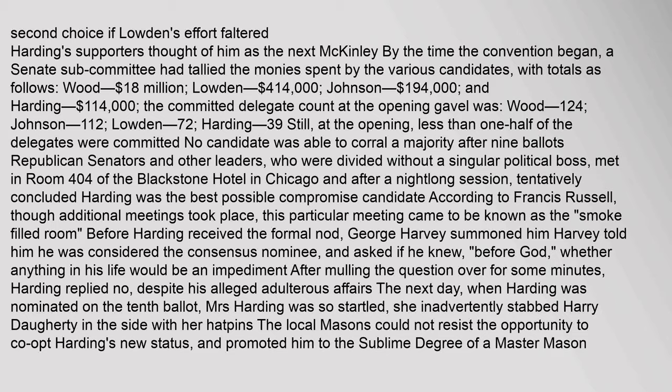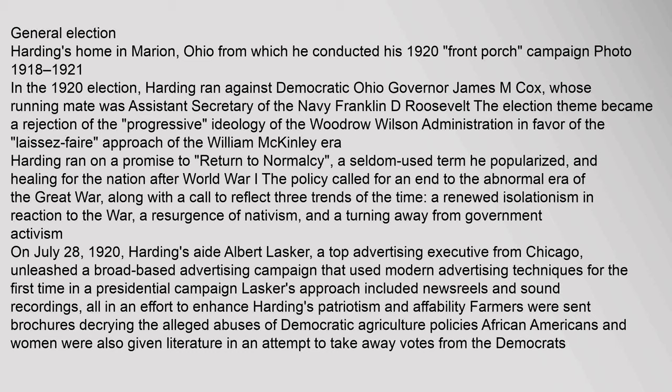In the 1920 election, Harding ran against Democratic Ohio Governor James M. Cox, whose running mate was assistant secretary of the Navy Franklin D. Roosevelt. The election theme became a rejection of the 'progressive' ideology of the Woodrow Wilson administration in favor of the 'laissez-faire' approach of the William McKinley era. Harding ran on a promise to 'return to normalcy', a seldom-used term he popularized, and healing for the nation after World War I.